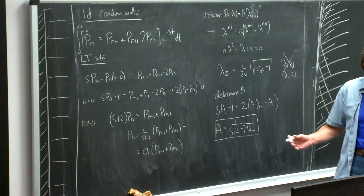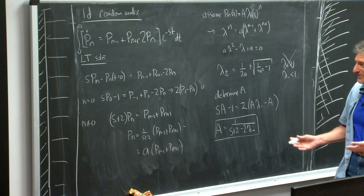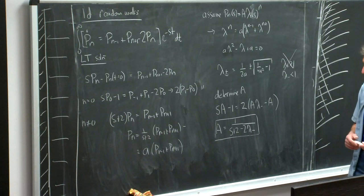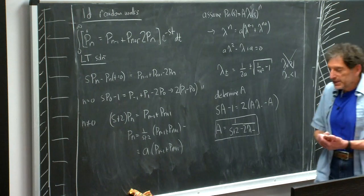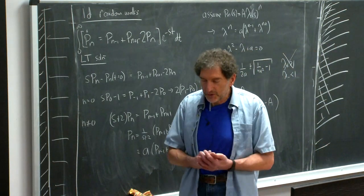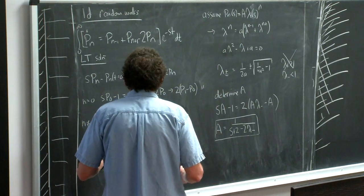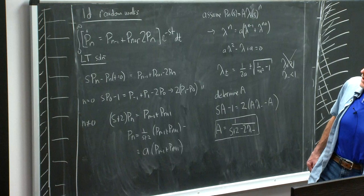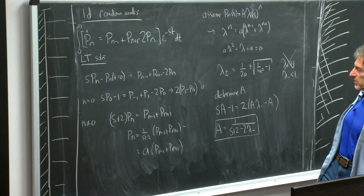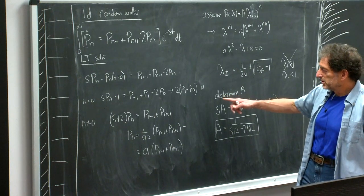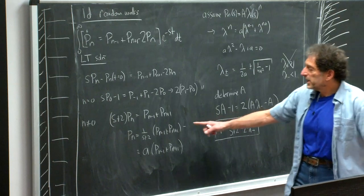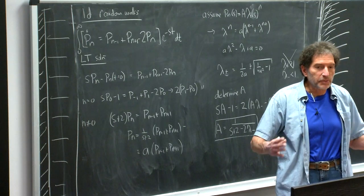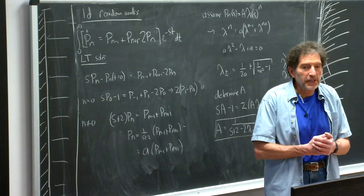We've solved the problem in the Laplace domain. What we're interested in is the long time limit, corresponding to the s going to zero limit of the Laplace transform. In the s going to zero limit we can extract the asymptotic behavior. Due to the symmetry of starting at the origin, P_{-N} = P_N for any N — the probability distribution spreads symmetrically, so P_{-1} and P_{-N} equal P_1 and P_N respectively.